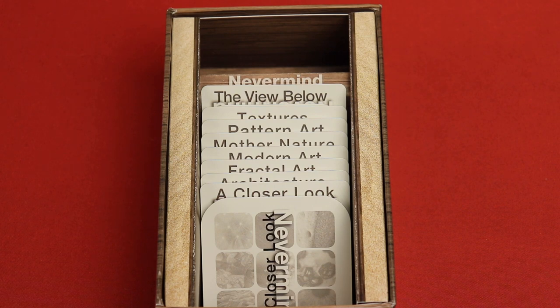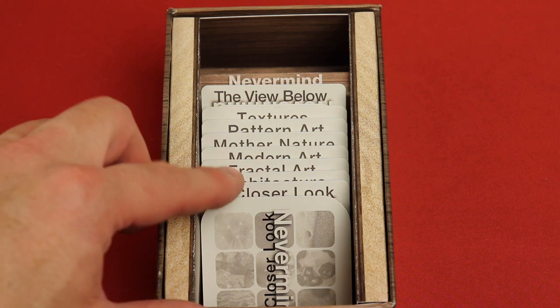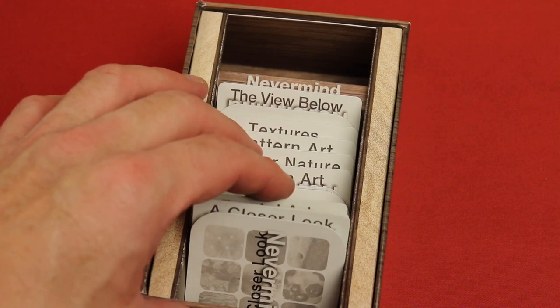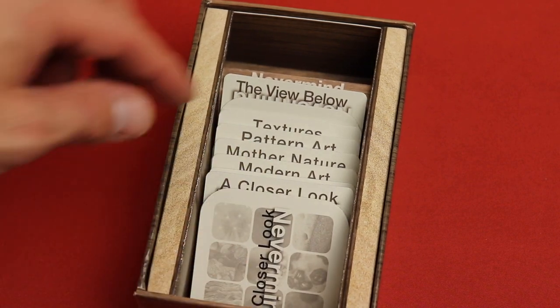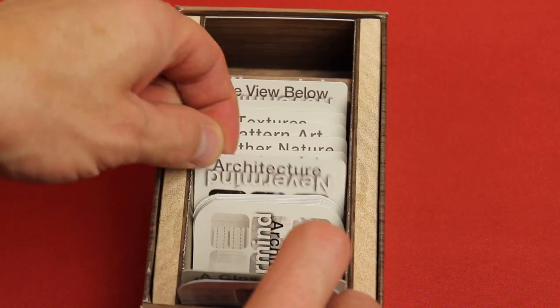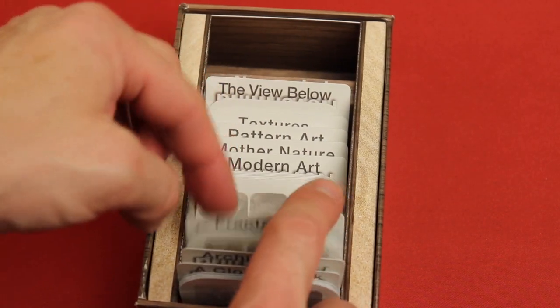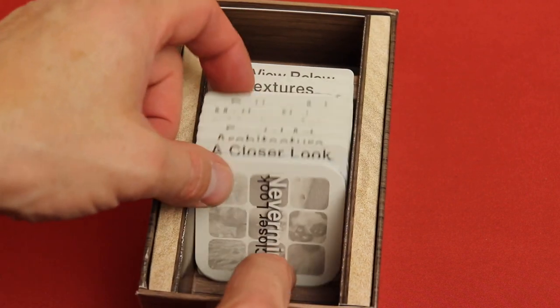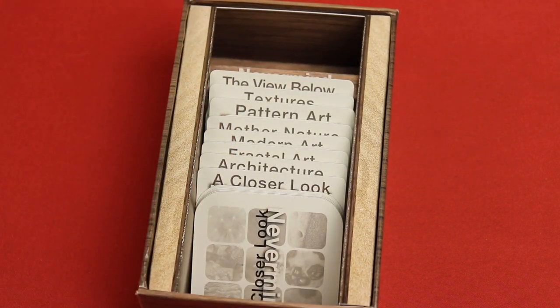Now it's actually two different series of games of Nevermind the Distraction. There is Abstract and Life. This one happens to be Abstract. At the beginning of the game, you actually get to choose which types of cards you want to play with. You'll be selecting three of them. So I'm actually going to be selecting A Closer Look and Architecture, and I'm actually also going to select Modern Art. Mechanically it doesn't change the game, but it does have different pictures on the back which will change the way you feel as you play the game.